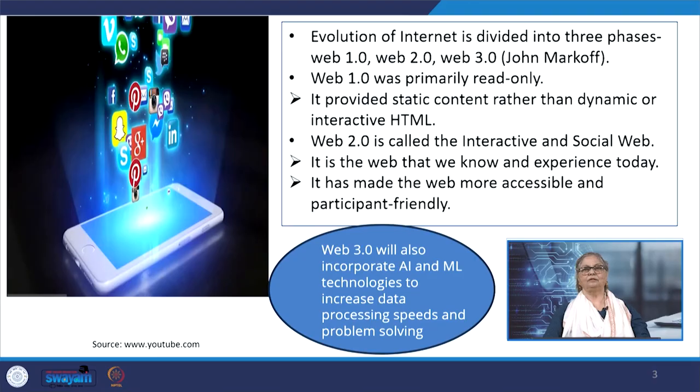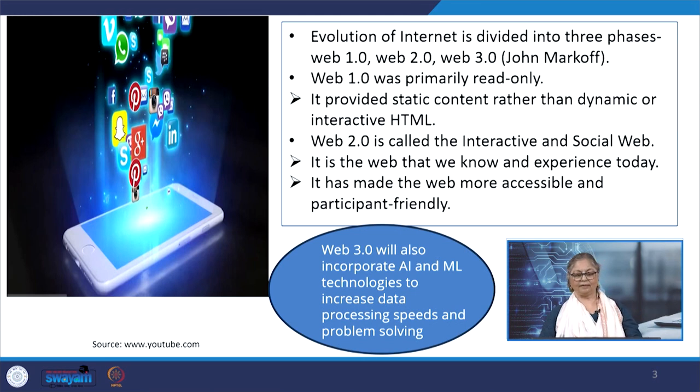In the following video, we will see a brief explanation of how the web evolved from Web 1.0 to Web 2.0 for some clarity. The short video from YouTube briefly explains how Web 1.0 is characterized by static web pages where content is fixed and cannot be easily updated or modified by users. Websites were primarily one-way communication platforms built for informational purposes only. This video talks about the evolution of the internet, dividing it into different phases. Web 3.0 will also incorporate AI and ML technologies to increase data processing speed and problem solving.